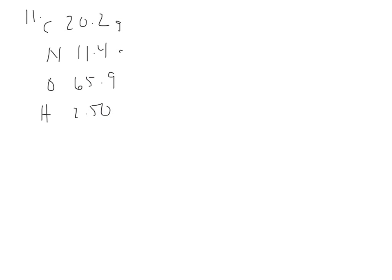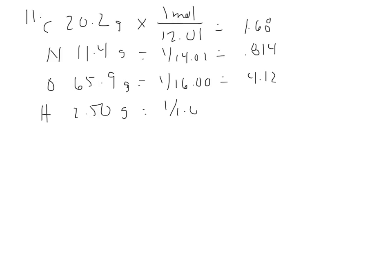So I can think of each of these percents as being the grams out of 100. And go ahead and convert to molar amounts. So my carbon, I'm coming up with 1.68 moles. My nitrogen, I'm coming up with 0.814 moles. My oxygen, I'm going to get a little over 4, 4.12 moles. And my hydrogen is going to be 2.48. So dividing by my smallest ratio, my smallest amount, my smallest molar amount, I should say, 0.814.